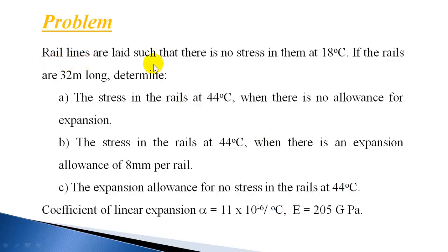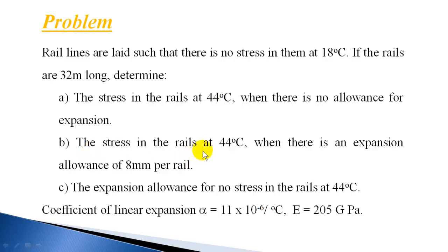In this next example, rail lines are laid such that there is no stress in them at 18 degrees centigrade. If the rails are 32 meters long, determine: first, the stress at 44 degrees centigrade when there is no allowance for expansion; second, the stress at 44 degrees centigrade when there is an expansion allowance of 8 mm per rail; third, the expansion allowance required for no stress in the rails at 44 degrees centigrade. Alpha = 11 × 10⁻⁶ per degree centigrade, E = 205 GPa.